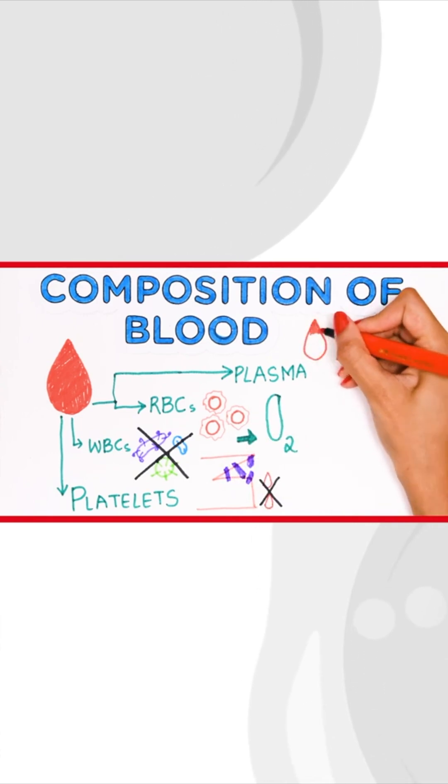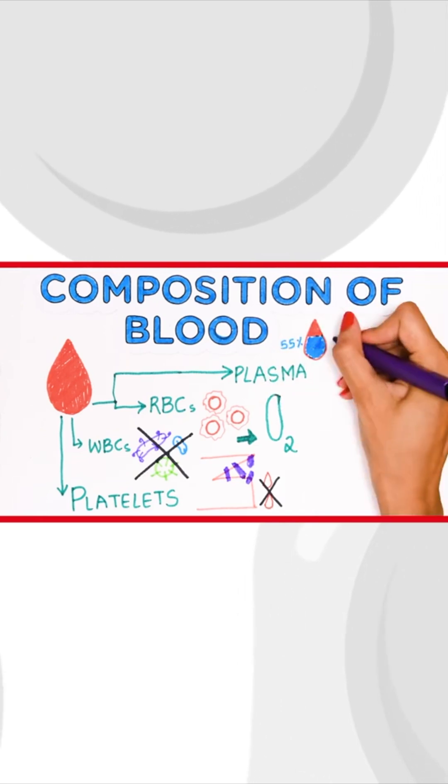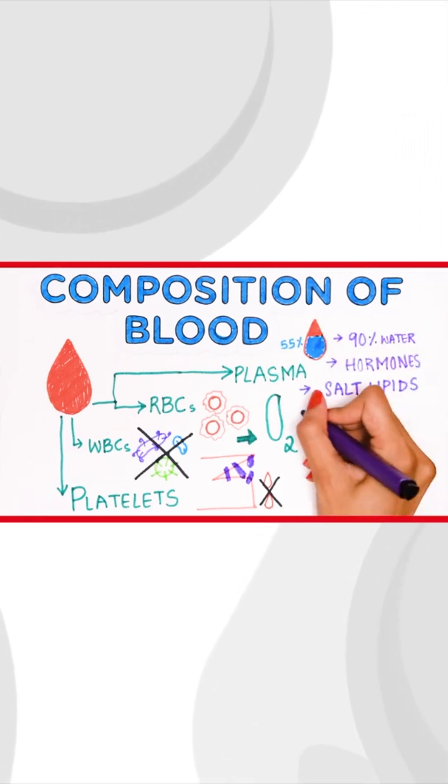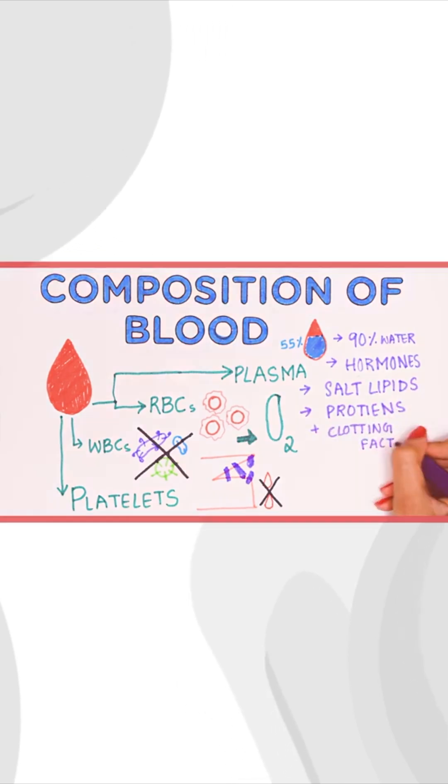Plasma is everything else once you account for the cells. It constitutes 55% of the total volume of blood. It is 90% water, salts, lipids, and hormones. It is also rich in proteins and clotting factors.